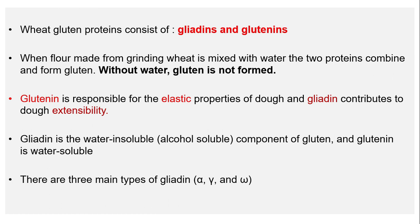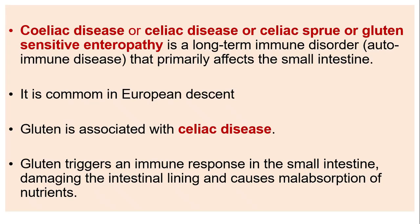Celiac disease, also called celiac sprue or gluten-sensitive enteropathy, is a long-term immune disorder. It is an autoimmune disease that primarily affects the small intestine and is common in people of European descent. Gluten triggers an immune response in the small intestine by damaging the intestinal lining and causing malabsorption of nutrients.